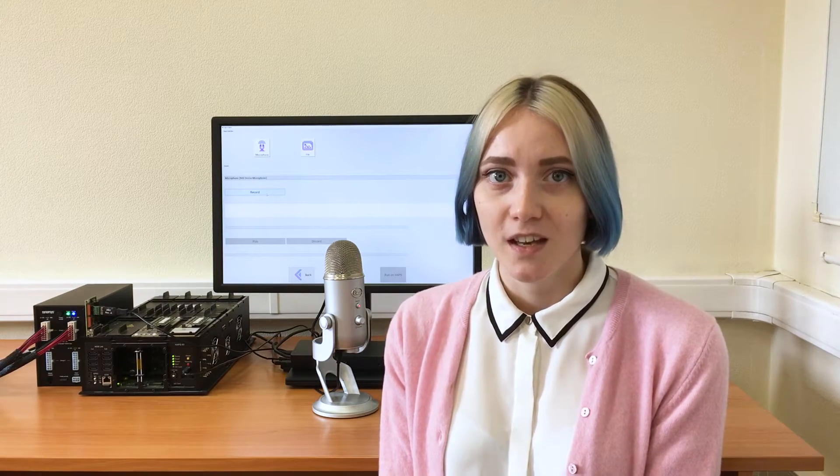First, let me tell you what natural language processing is. Natural language processing, or NLP, is a kind of artificial intelligence that transforms unstructured text into a format that a machine can understand and take some action based on it. It's a broad area that includes a variety of different approaches and applications.